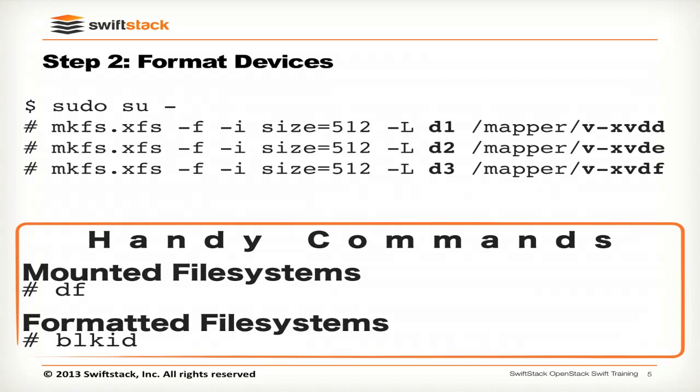The most important thing here is mounting by label. This is a very good best practice so that when your system reboots, you're not going to get your drives mounted in a different order or remapped to a different mount point. By creating the file system and mounting them by label, it becomes very important — not that we have any practical experience with nodes rebooting and having the entire node show up and not knowing where any of the data is.